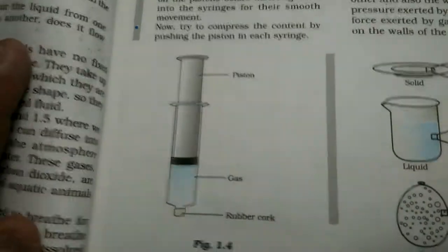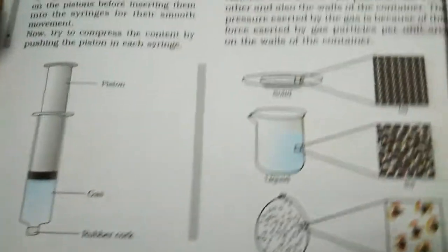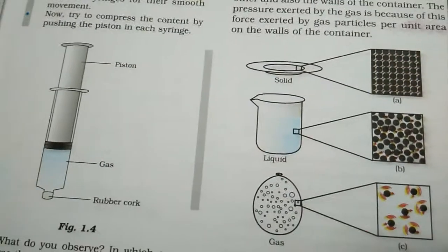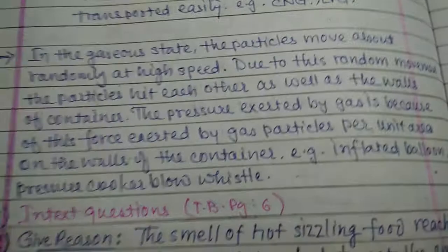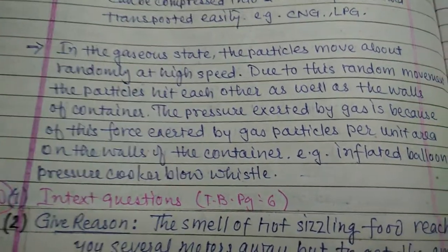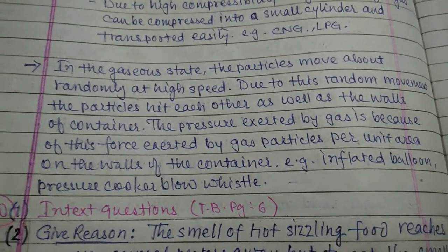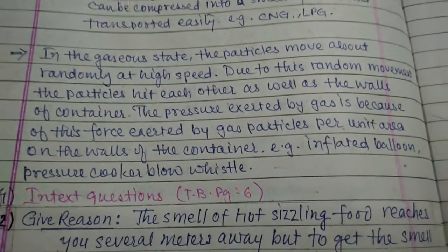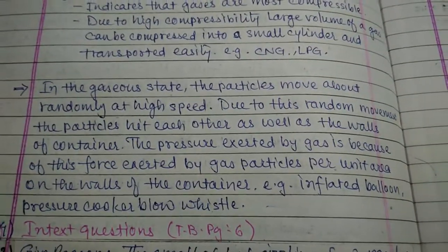Now Activity 1.11 is about the gaseous form. A diagram of a syringe is shown here. If we close the nozzle of the syringe and press the piston, it compresses slightly. But if solid or liquid is filled in the syringe, liquid will not compress much.